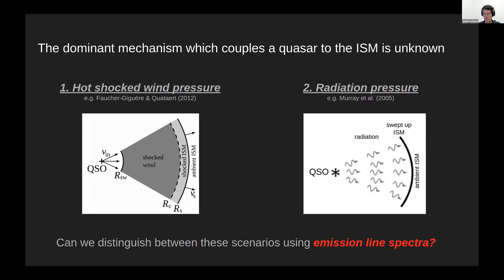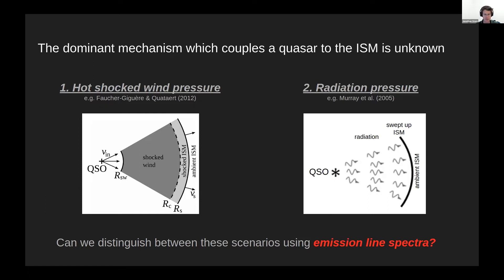You can see here the two popular models. On the left is the shock wind model, where a nuclear wind shocks against the ISM, creates a hot gas bubble which expands and pushes on the ISM and drives a large-scale outflow. On the right, radiation pressure directly from the accretion disk sweeps up the ISM and drives a large-scale outflow. It's not straightforward to understand which mechanism dominates based on theoretical arguments alone.